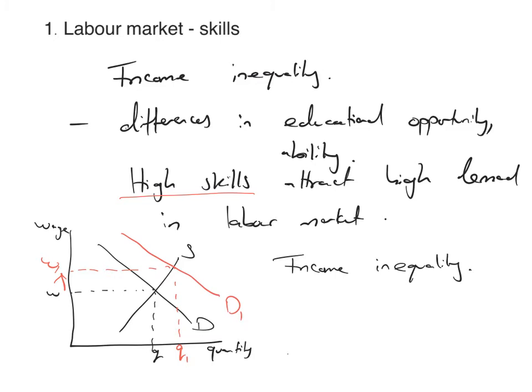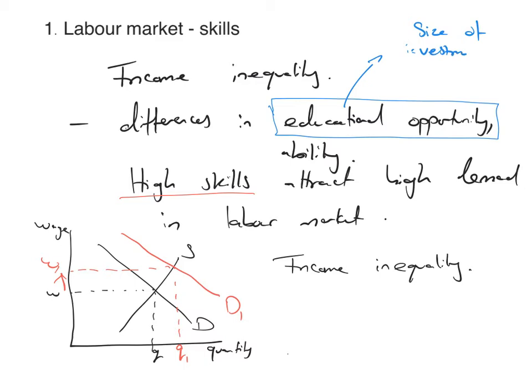You can evaluate that point straight away. The differences in skills across a population are going to depend on government policy. I've talked here about educational opportunity — differences in that will depend on the size of investment made into UK state schools. At the moment, if you watch the news, we hear there's a crisis in funding in state education in the UK. That would be something I could bring in to reach level three with some contextualised analysis. That's my first point.